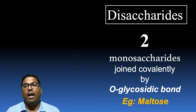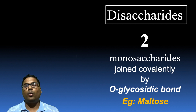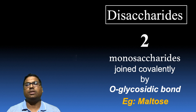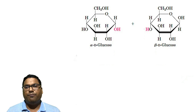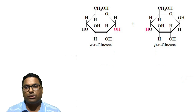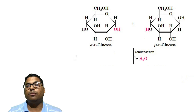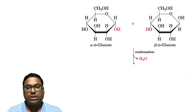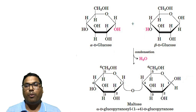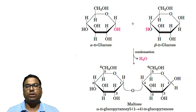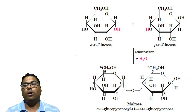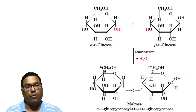An example is maltose sugar, which has glucose and glucose units joined together covalently by a glycosidic bond. We are observing alpha-D glucose and beta-D glucose — these are anomeric forms of the D glucose unit. The hydroxyl group from alpha-D glucose and hydrogen from beta-D glucose undergo condensation to form a water molecule, and as a result a covalent bond is formed between these two sugars called the glycosidic bond. And we have got our disaccharide maltose formed.